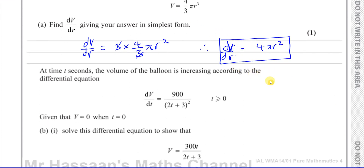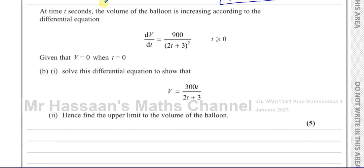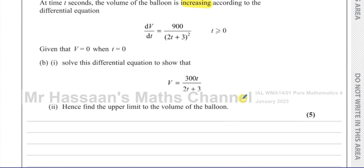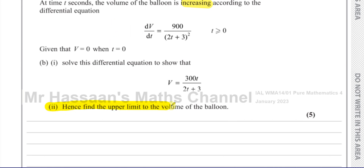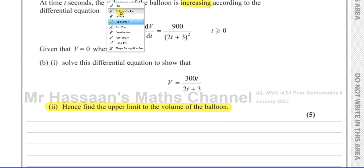For part B, at time t seconds the volume of the balloon is increasing according to the differential equation dV/dt equals 900 over (2t + 3) squared, where t ≥ 0. Given that V equals 0 when t equals 0, we've got to solve this differential equation to show the given result. Then part B also says: hence find the upper limit to the volume of the balloon — let's not forget this second part.